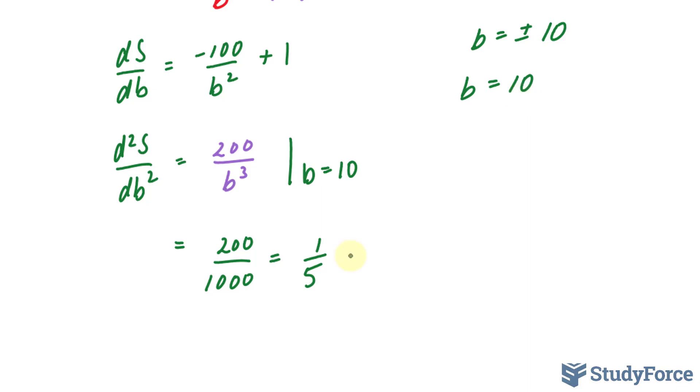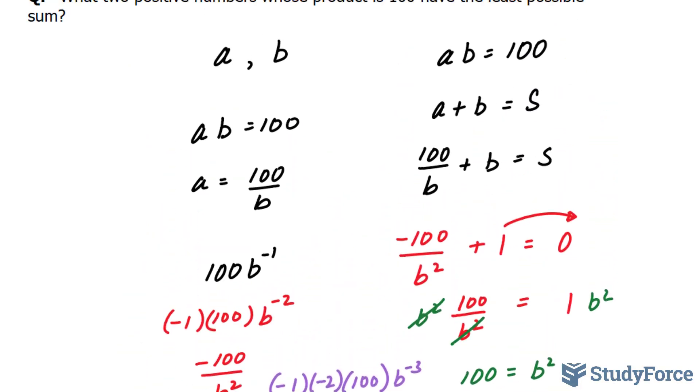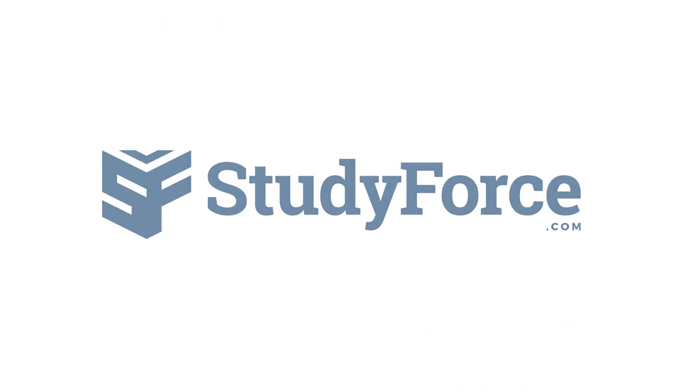So to summarize, the question asked what two positive numbers had a product of 100 and have the least possible sum? Those two numbers are 10 and 10, because substituting this 10 back gives you an A of 10. And there you have it. That is how to solve optimization problems in calculus. Make sure to watch question 10 for another example. Thank you.